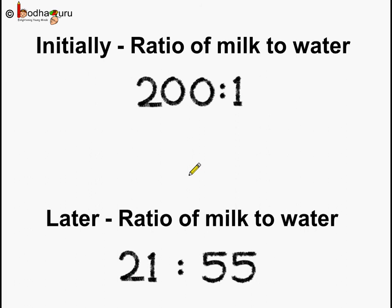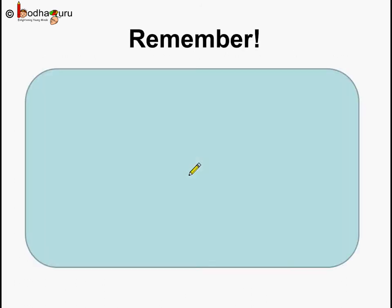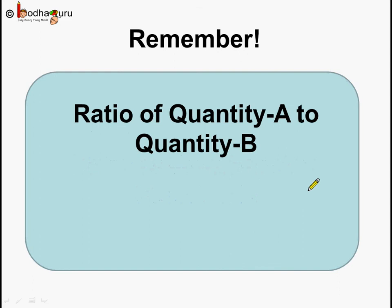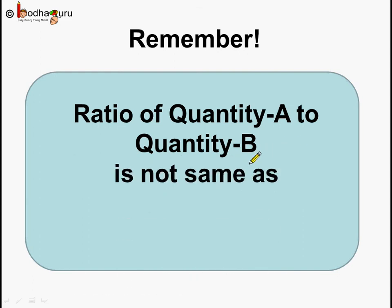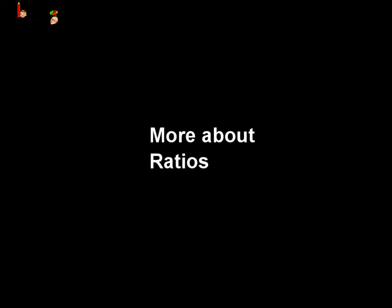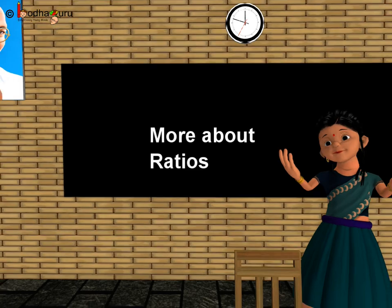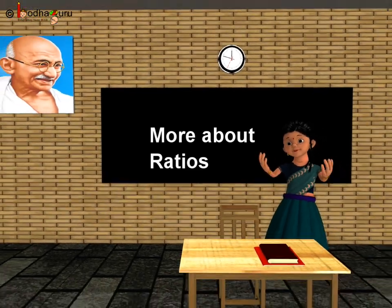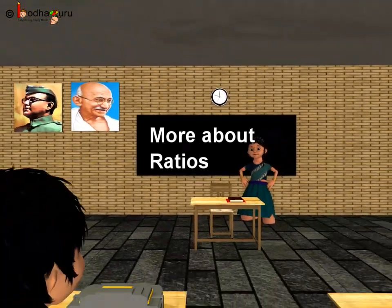So now you know a lot about ratios. To reiterate: the ratio of quantity A to quantity B is not the same as the ratio of quantity B to quantity A in general, unless quantity A and quantity B are the same. That's all for now. Bye-bye children.